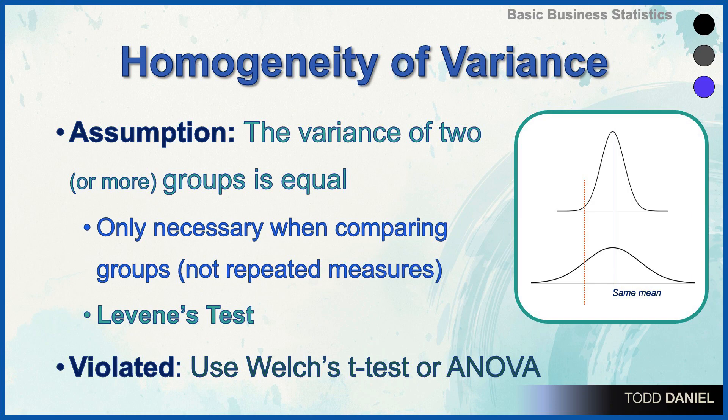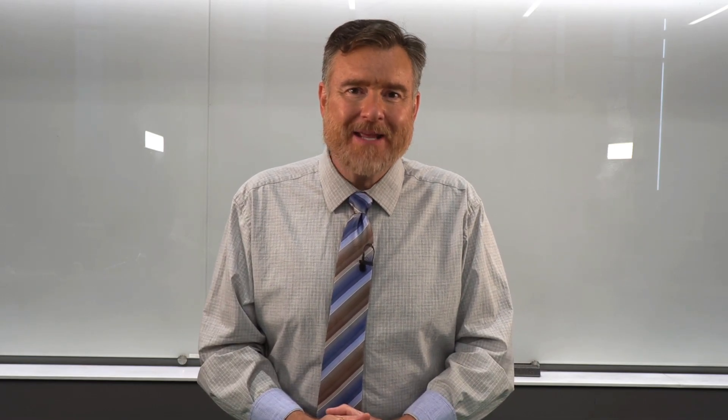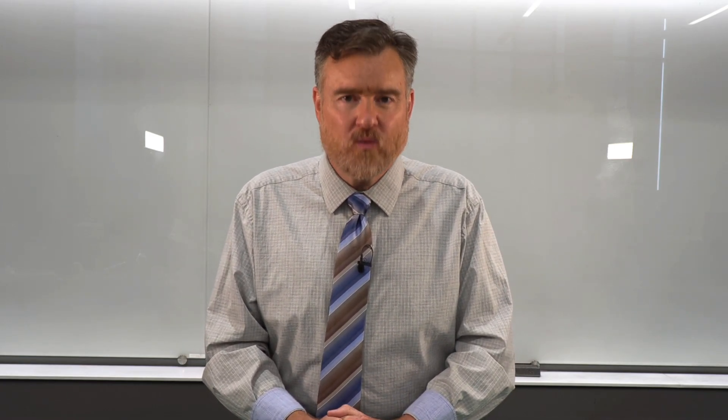What should you do if you test for homogeneity and determine that the variance of your two groups are not equal? In that case, we can use the Welch's t-test or a variant with the ANOVA as a substitute for Student's t-test. And I'll teach you about Welch's t-test as we learn about independent samples t-tests as well.